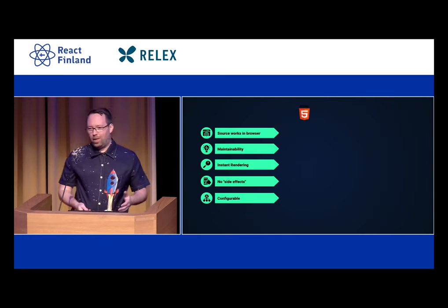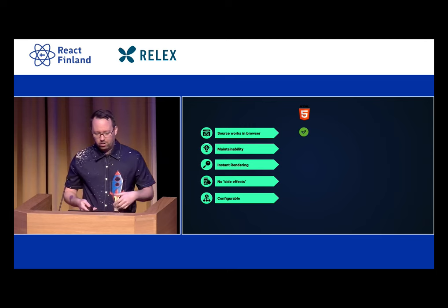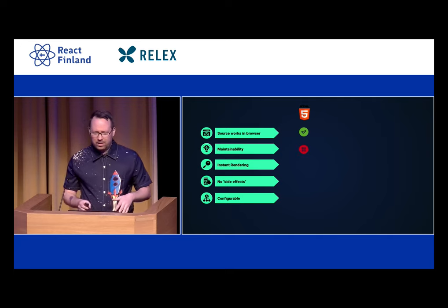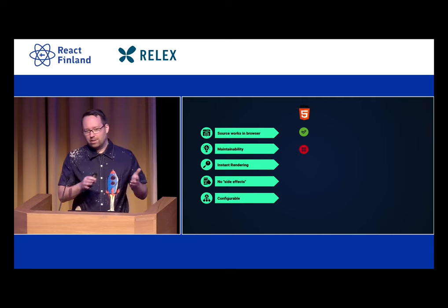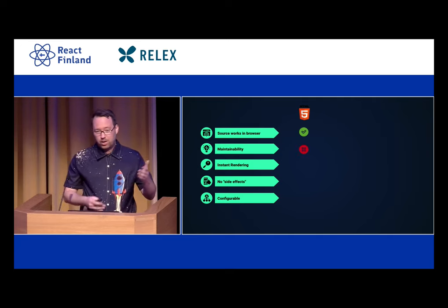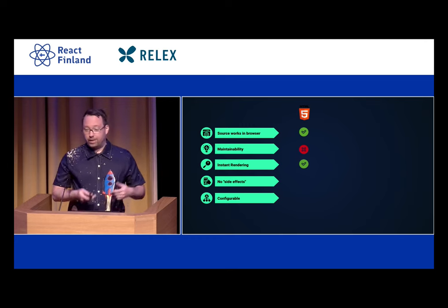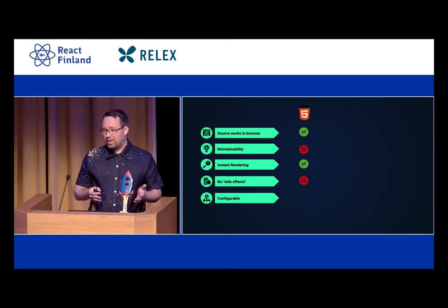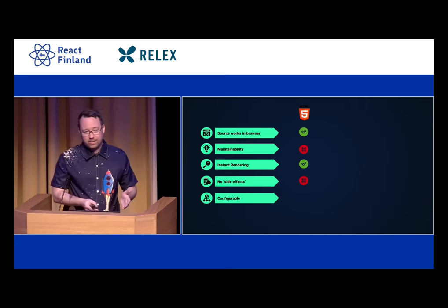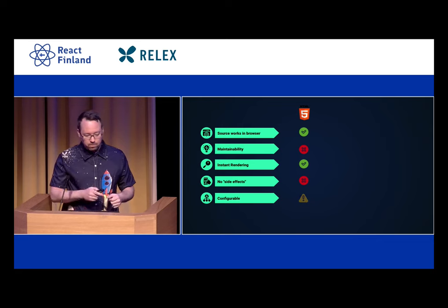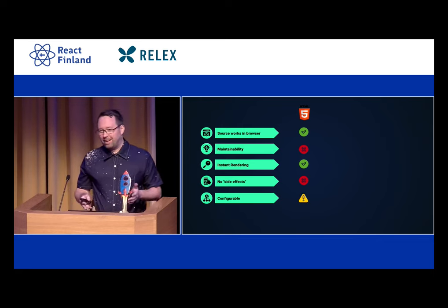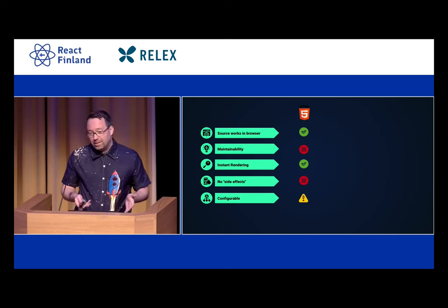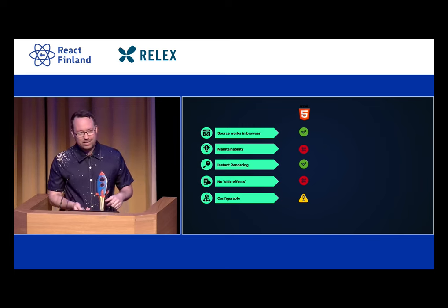So how are we doing on our wish list? The source works in the browser — it's just HTML, JavaScript, and CSS. Maintainability is not that great because if the HTML structure changes you need to change it in a lot of places. We get instant rendering because CSS loading is render blocking. We do have side effects — if you put the wrong stuff in your CSS file, then boo-hoo. And configurable — everyone can basically do whatever in their HTML, but I would not say that's truly configurable.